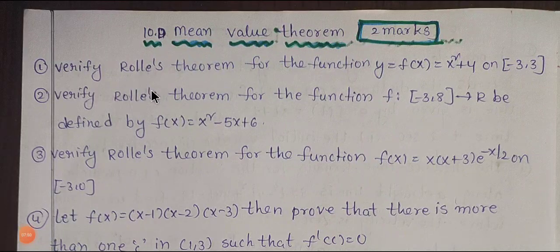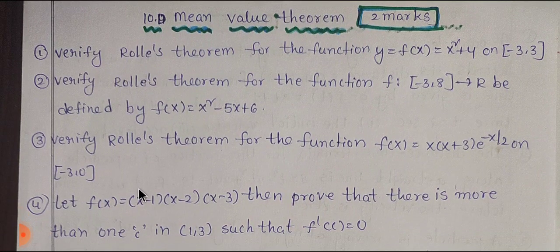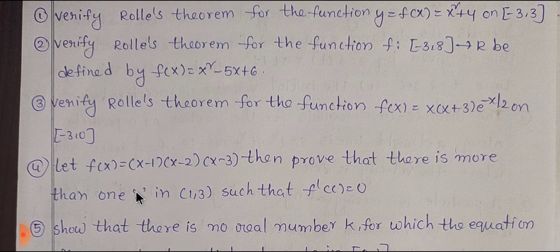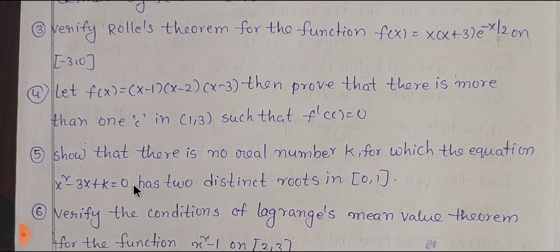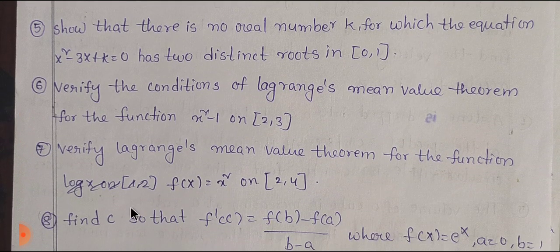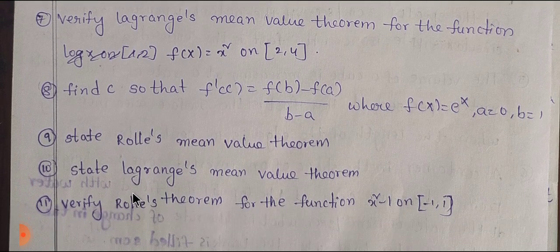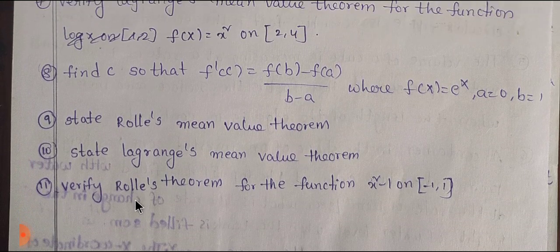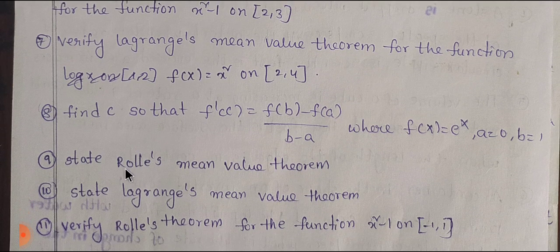The fourth sub-unit is the mean value theorem. You have only 2 marks here. Problems are numbered 7, 8, 9, 10, and 11. You have only 2 marks for this section.